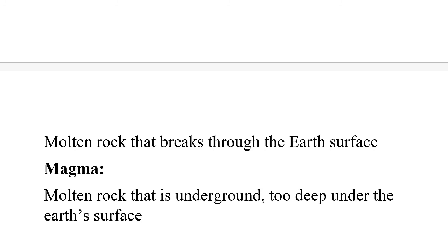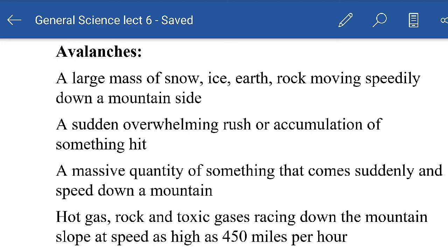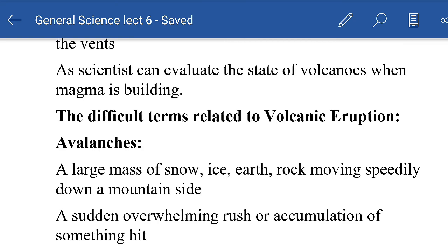Lava is molten rock on Earth's surface, while magma is underground molten rock found at very deep levels. These are four key terms: avalanche, lahar, lava, and magma. Avalanche is a separate topic but has been covered briefly here with volcanoes as it is not a vast topic. Alhamdulillah, our coverage of avalanche is complete.